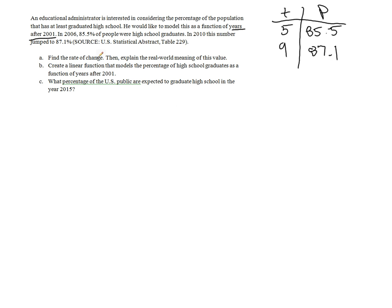Find the rate of change, then explain the real world meaning of this value. So we go from 85.5 to 87.1. You find the difference there. That is 1.6, and that's in percent, that's the percentage jump, over four years. So that means that if we divide that by four, we get 0.4% per year.